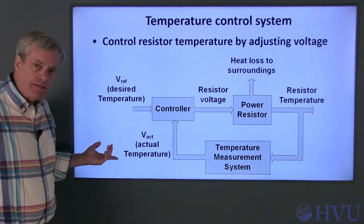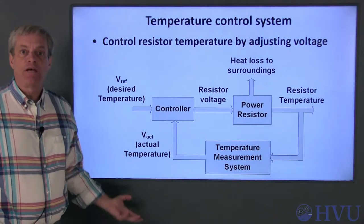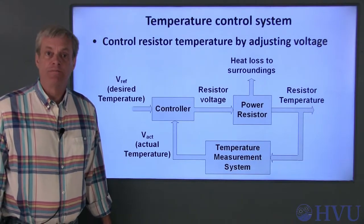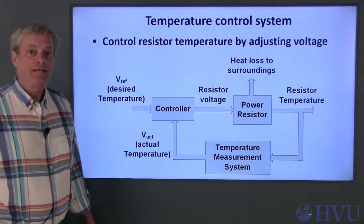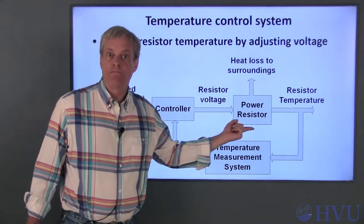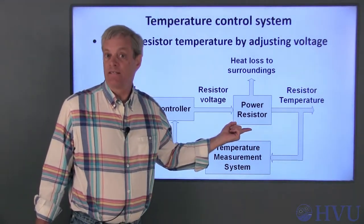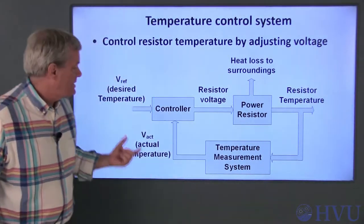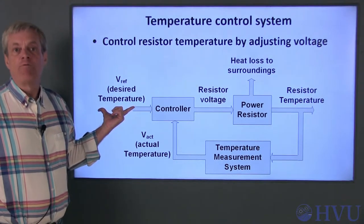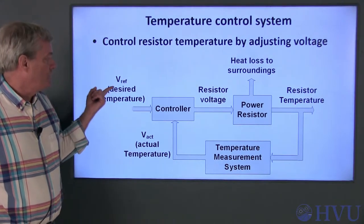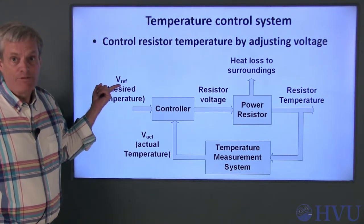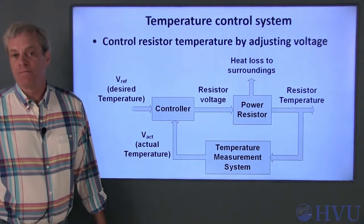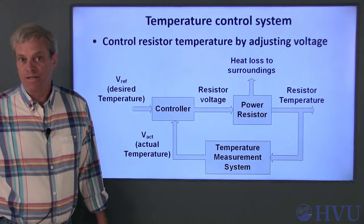This is a block diagram showing the components of the system and their inputs and outputs. The plant is simply a resistor whose temperature needs to be at some desired value. The desired temperature will be set by a reference voltage, Vref. The higher Vref is, the higher the desired temperature of the resistor is.